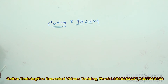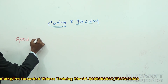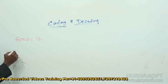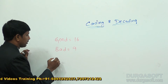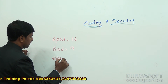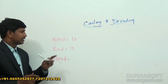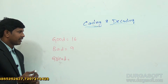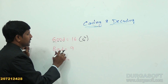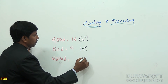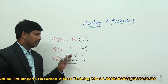Sometimes there will be a code like: if good is coded as 16 and bad is coded as 9, what is the code for great? If you understand this, good has 4 letters — that's why it is 4 squared = 16. Bad has 3 letters — that's why 3 squared = 9. Great has 5 letters, so 5 squared = 25 should be the answer.